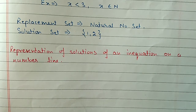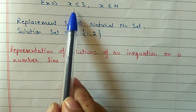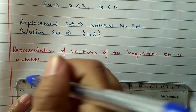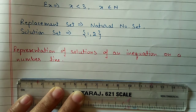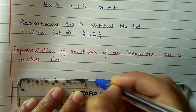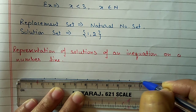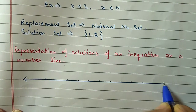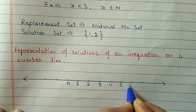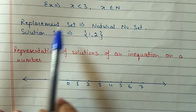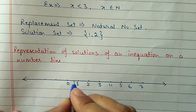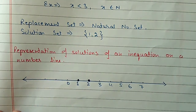For x less than 3 where x belongs to natural numbers, natural numbers start from 1, so we take 1 and 2. The solution set is {1, 2}. For representing the solution on a number line, draw a number line with pencil and scale, mark numbers at equal distances with arrows on both sides. Since the replacement set is natural numbers, we highlight only 1 and 2 on the number line.